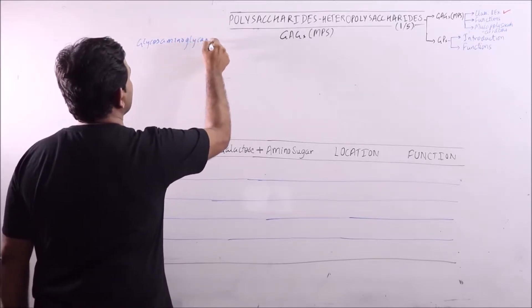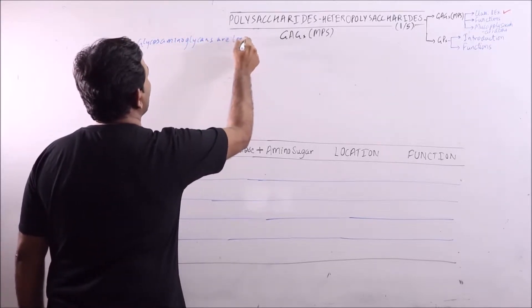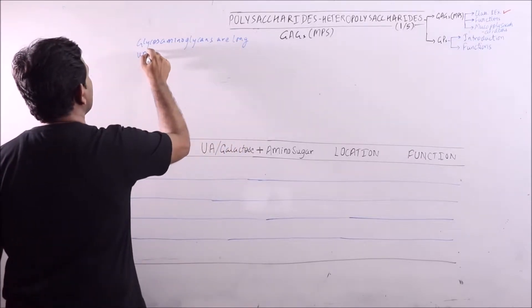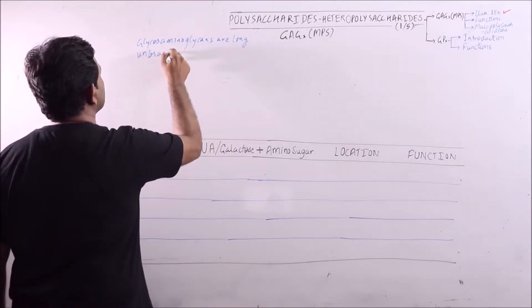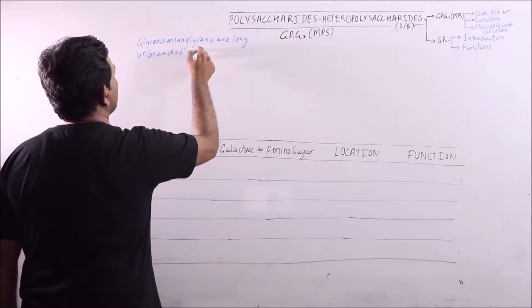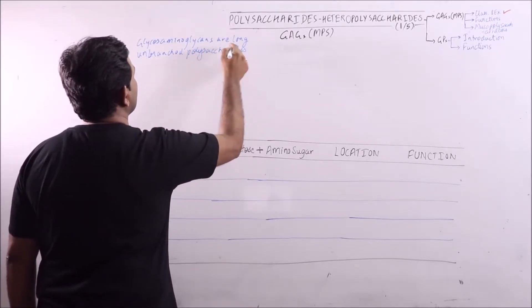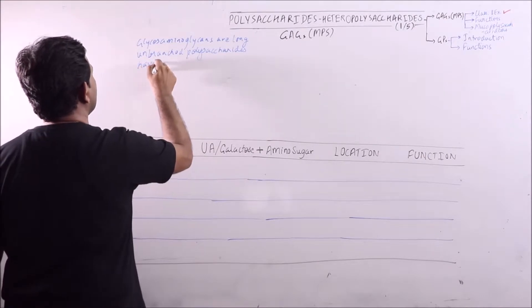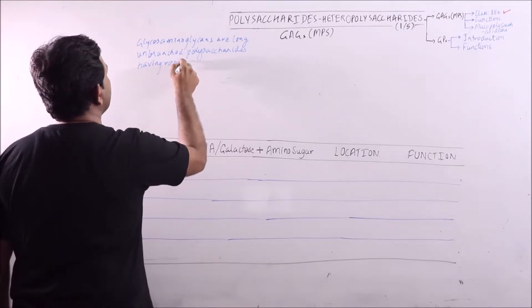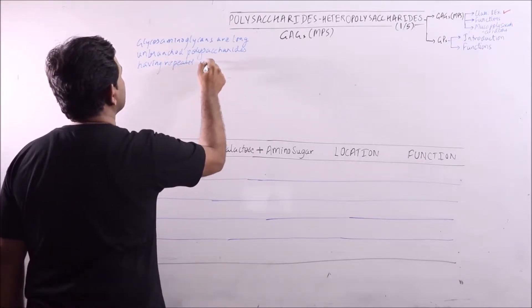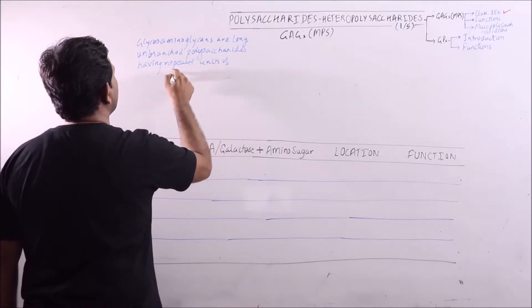Glycosaminoglycans are long unbranched polysaccharides having repeated units of disaccharide.